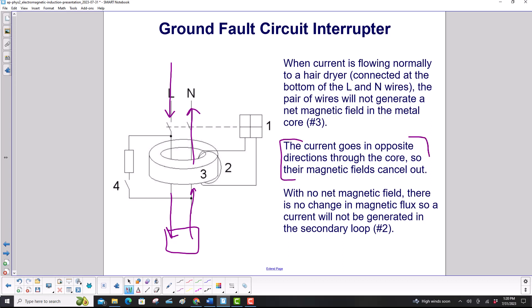The magnetic fields go in opposite directions through the core. So the magnetic fields cancel out. With no net magnetic field, there is no change in magnetic flux. So a current will not be generated in your secondary loop over here.